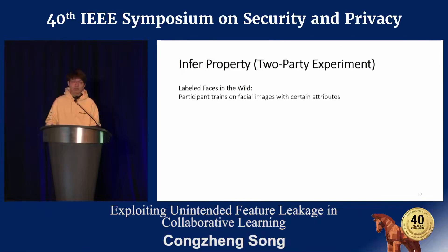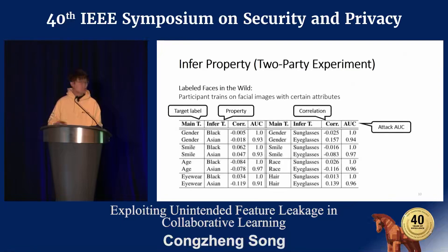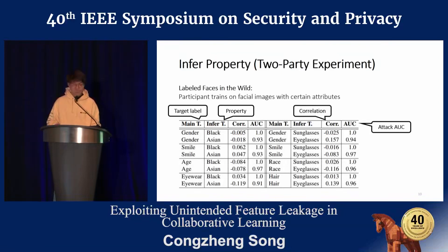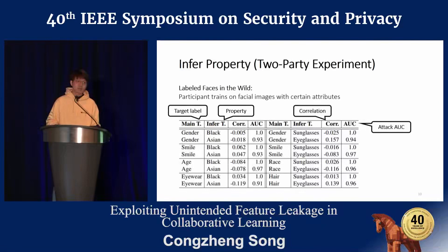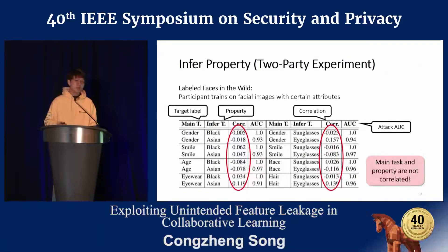Let's see some results. I'll first show results on inferring properties in a two-party setting using the Labeled Faces in the Wild dataset, where the participant trains on facial images with certain facial attributes. The table shows the target label the model is trying to learn, the property the adversary wishes to infer, the correlation between the task label and the property, and the attack AUC score in the final column. The AUC scores are very high — some near perfect — and importantly, the correlation between the task label and the property is very small. This demonstrates that model updates really leak uncorrelated information about the input data.